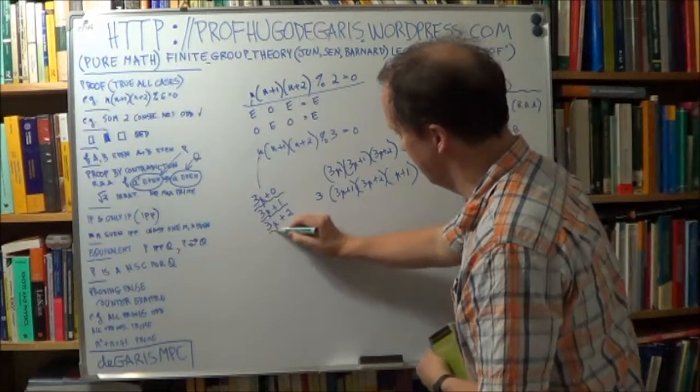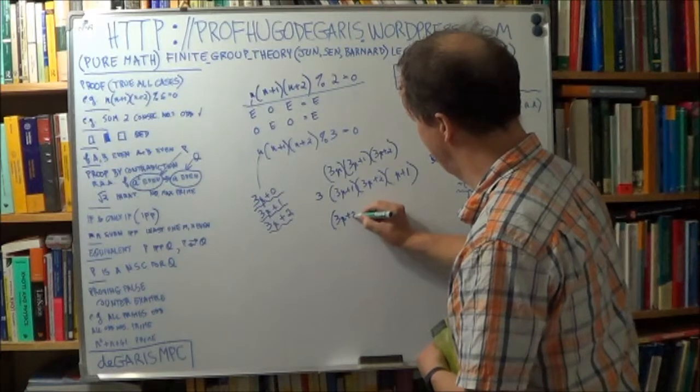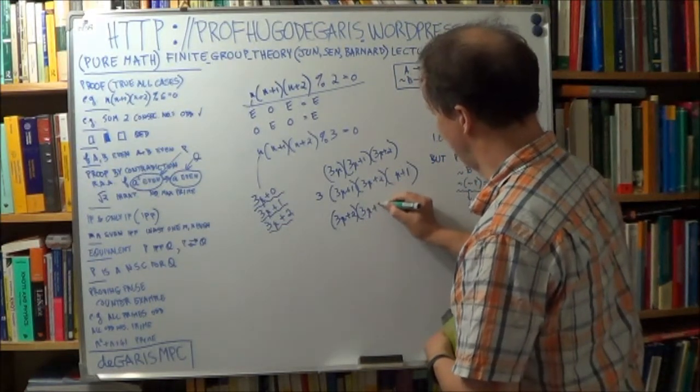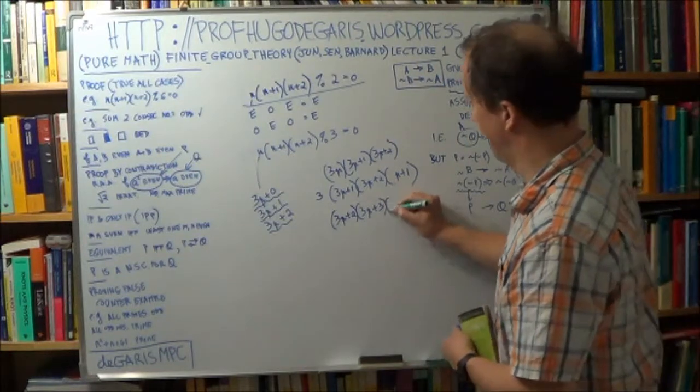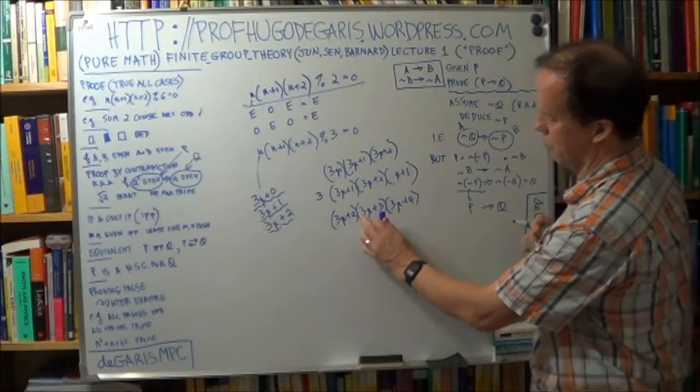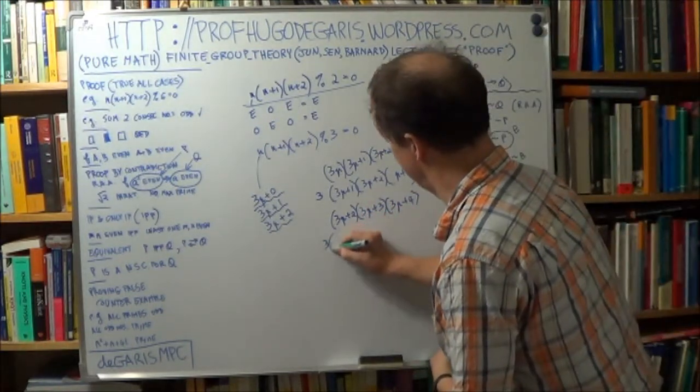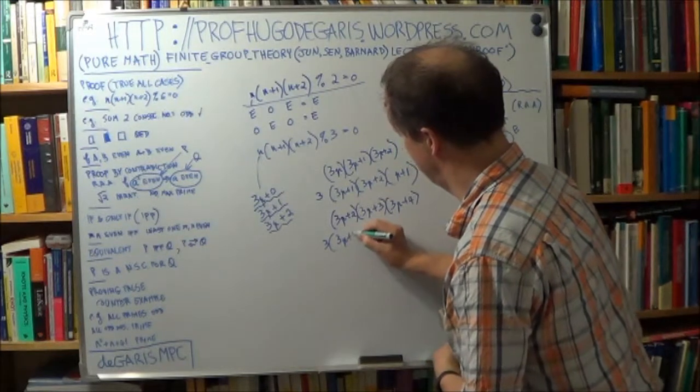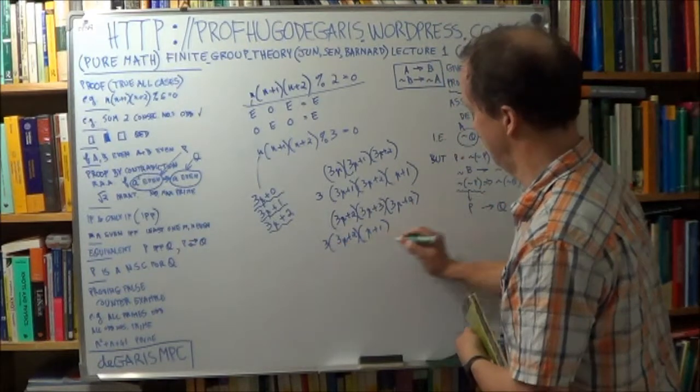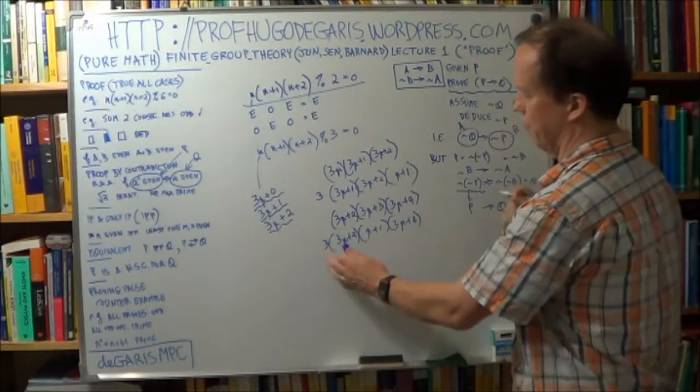Now, a similar logic with this one. We'll just do it quickly. So let n be 3p plus 2. So this one will be 1 greater than it. So 3p plus 3. So this will be 3p plus 4. Okay. Now, you've got 3 in common here. So that becomes 3p plus 2 into p plus 1. And take the 3 outside here. And 3p plus 4. So this has a factor of 3.